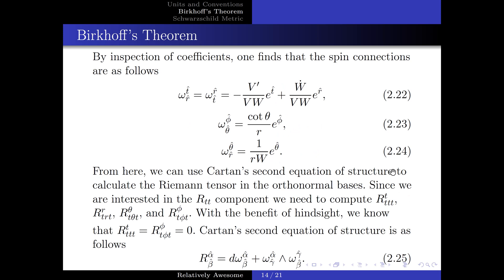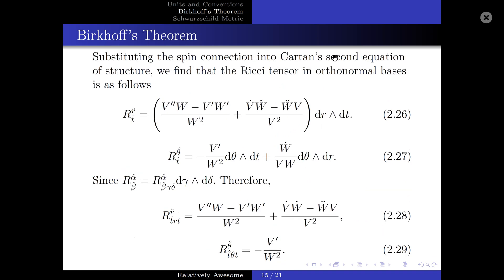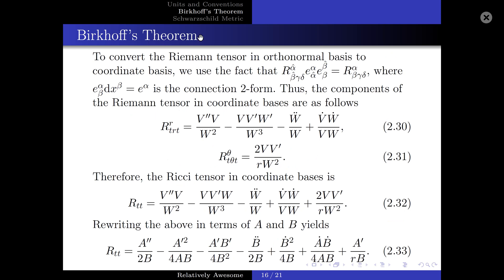From here, we can use Cartan's second equation of structure to calculate the Riemann tensor. Since we are interested in the R-TT component, we need to compute four Riemann tensor components. With the benefit of hindsight, two of these Riemann tensors are equal to zero. Substituting the spin connections into Cartan's second equation of structure, we obtain the Ricci tensor in orthonormal bases. Since the Ricci tensor is related to the Riemann tensor in a specific manner, we can write the Riemann tensor in orthonormal bases and convert to coordinate bases using the connection two-form E-alpha-beta. Thus, the components of the Riemann tensor and the Ricci tensor in coordinate bases are obtained.